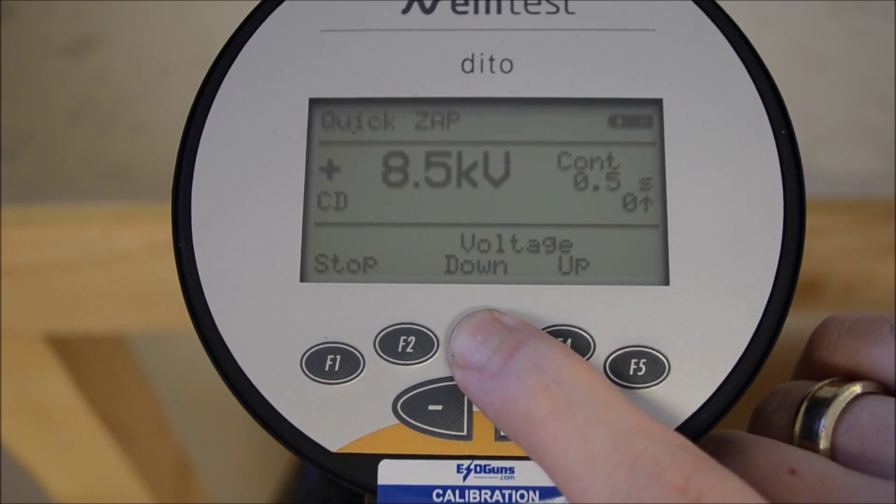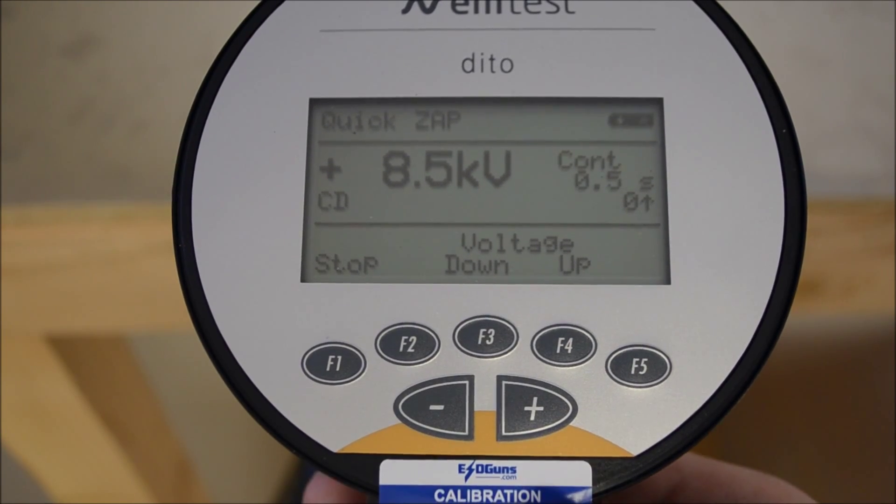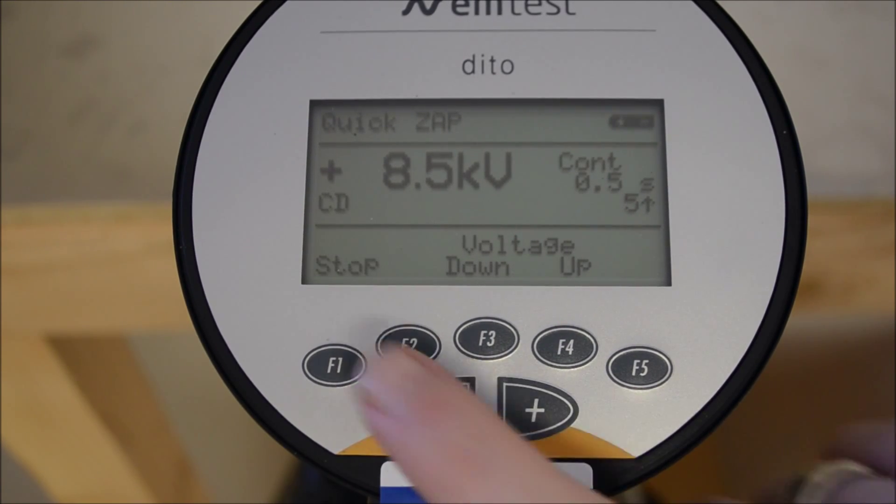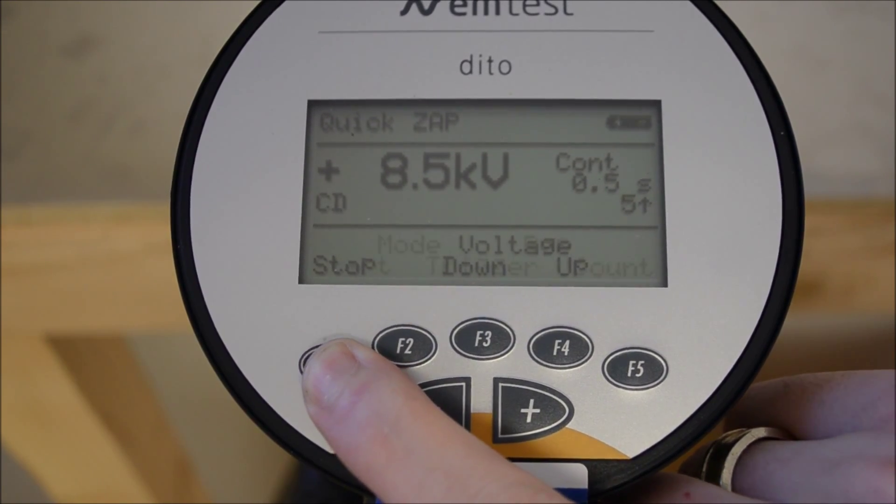F1 to engage discharging and you'll notice a different menu allowing manual voltage adjustment. Holding the trigger down, the counter increments with each successful arc and releasing the trigger stops the firing. F1 again to deactivate the high voltage.